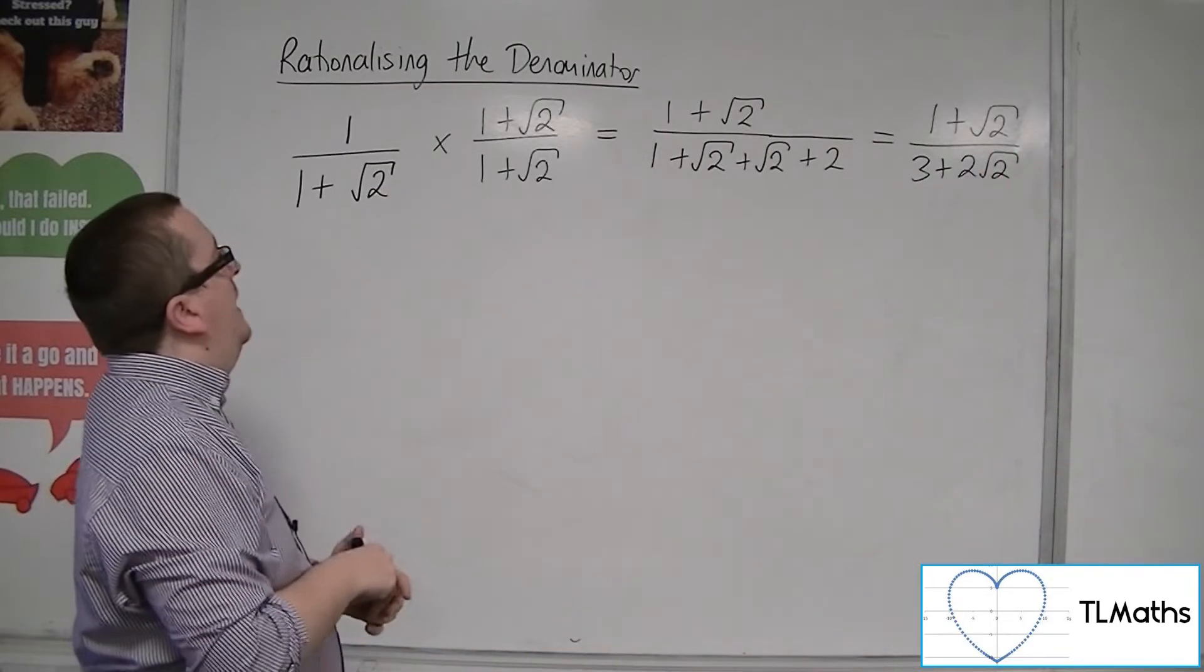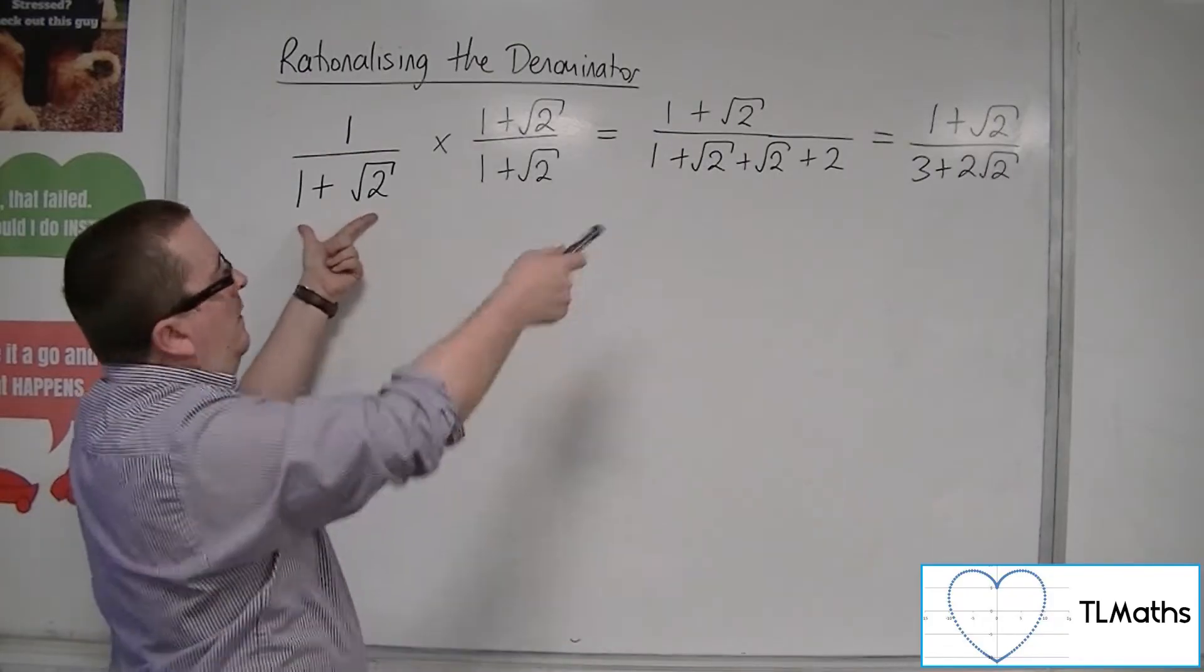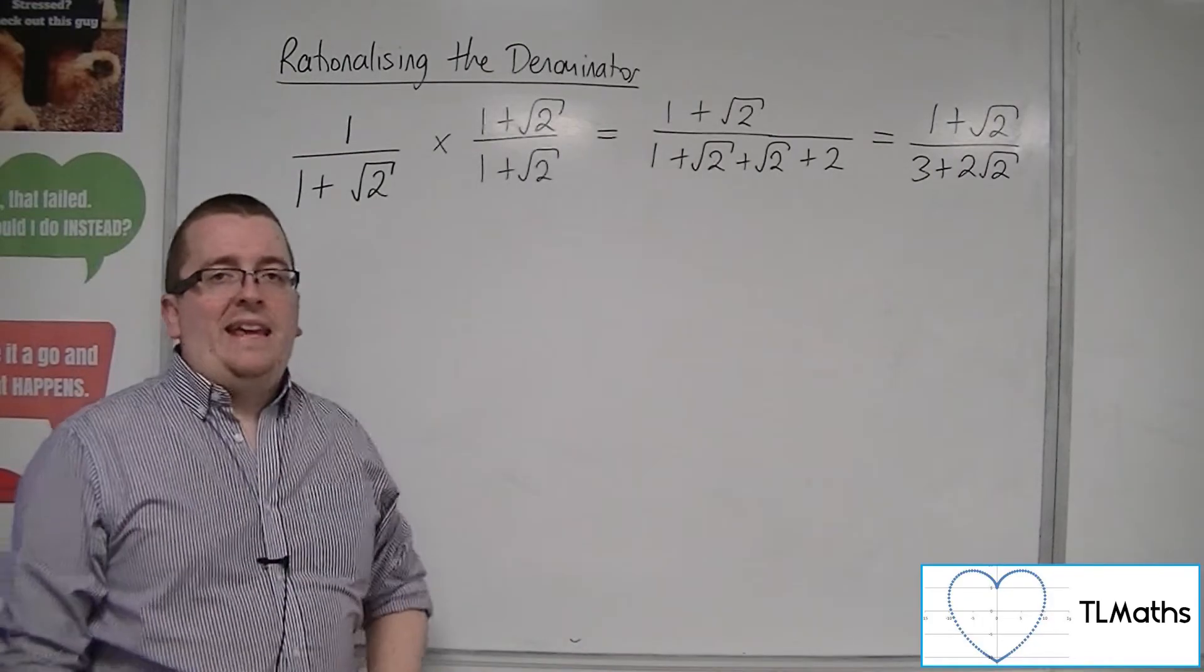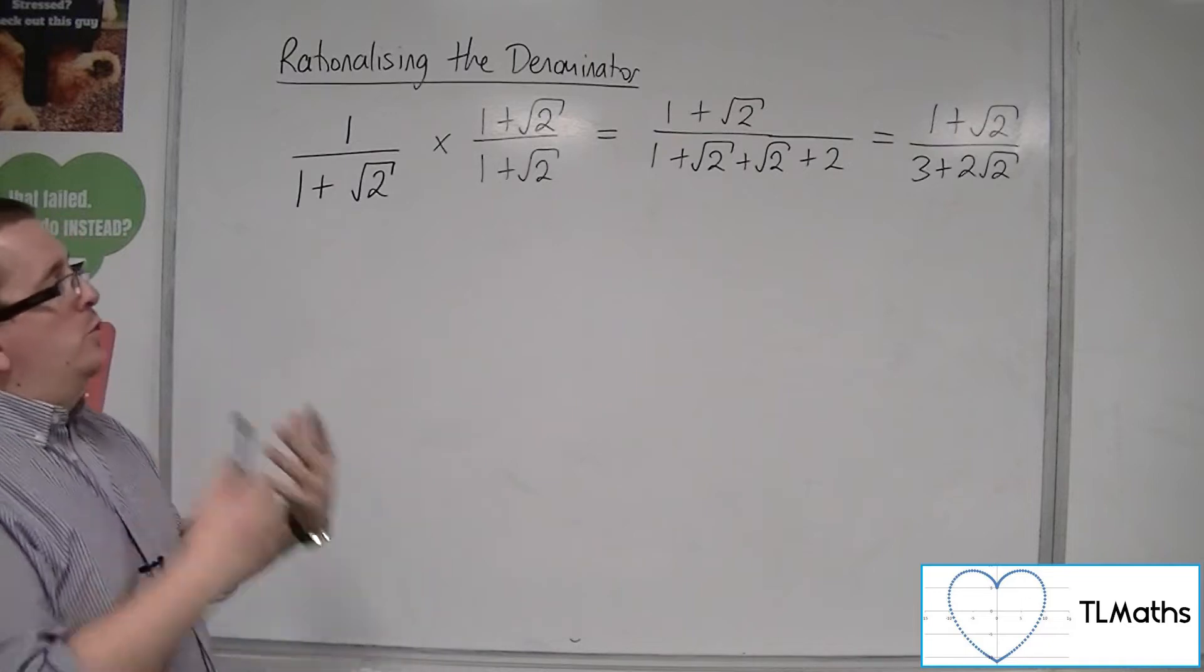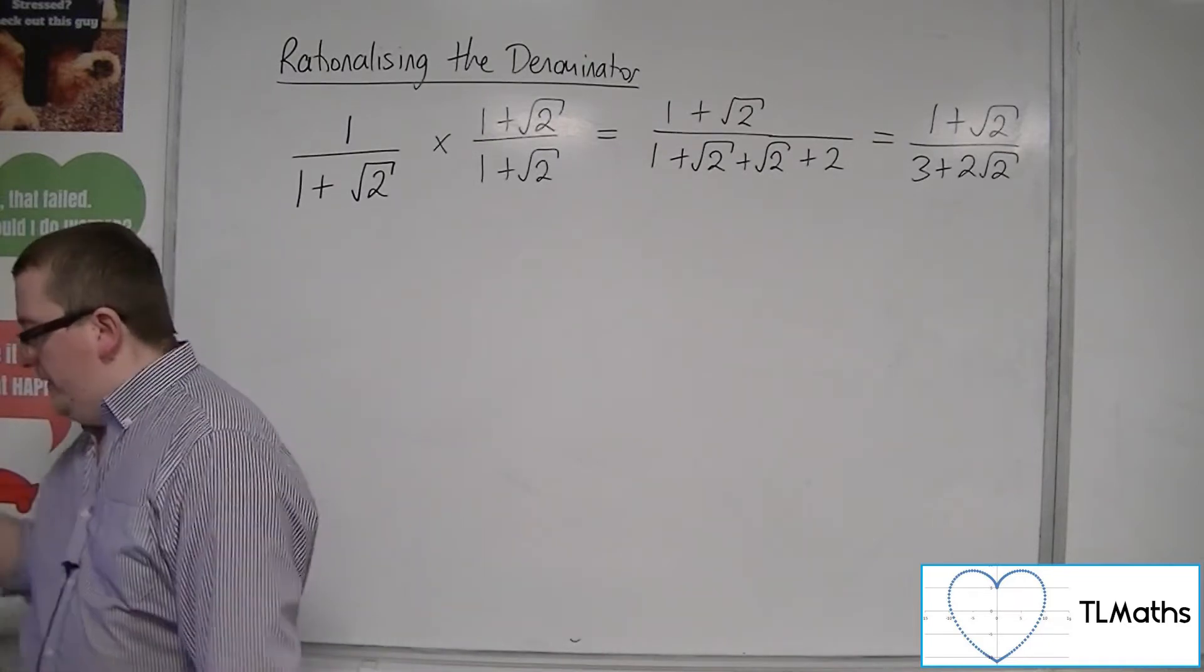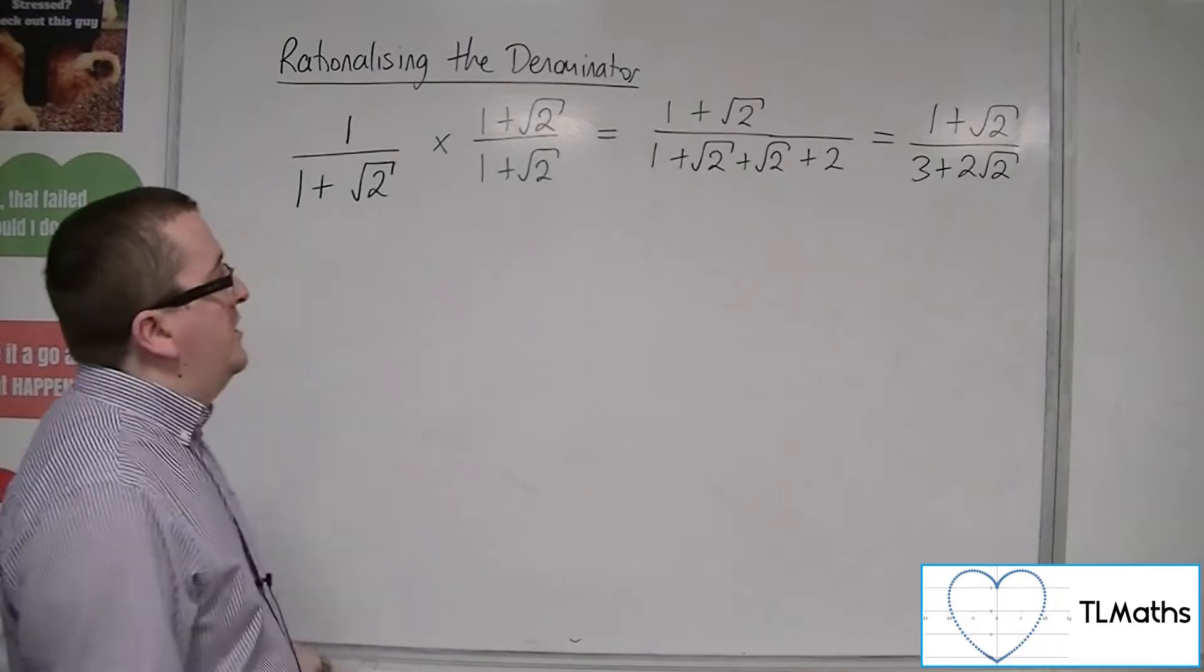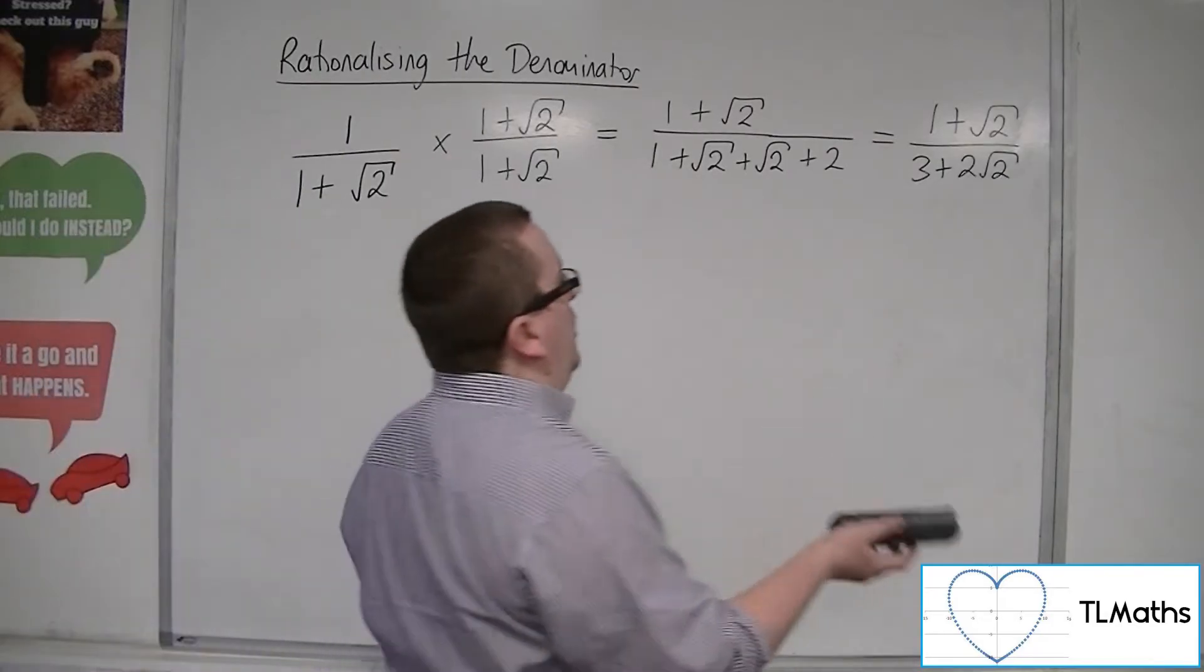So it hasn't made our problem any easier for us. We've still got an irrational denominator. So that didn't work either. So what is left to us?